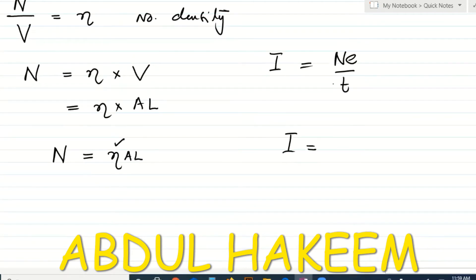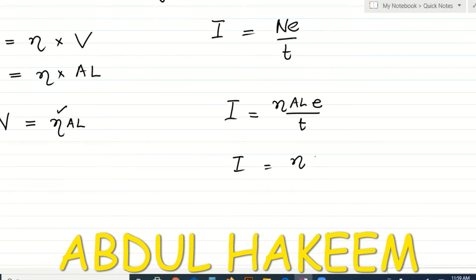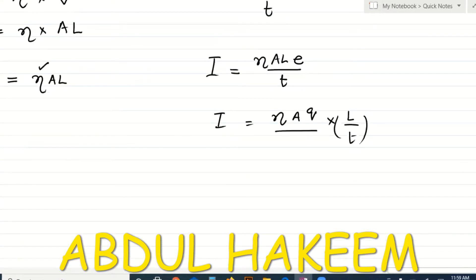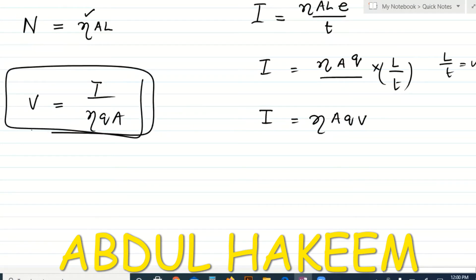Substituting into I = ne/t: I = nAle/t. Since l/t is the distance covered by an electron divided by time taken, l/t equals speed. Therefore I = nAqv, where v is called the drift velocity of the electron. Drift velocity v = I/(nqA).